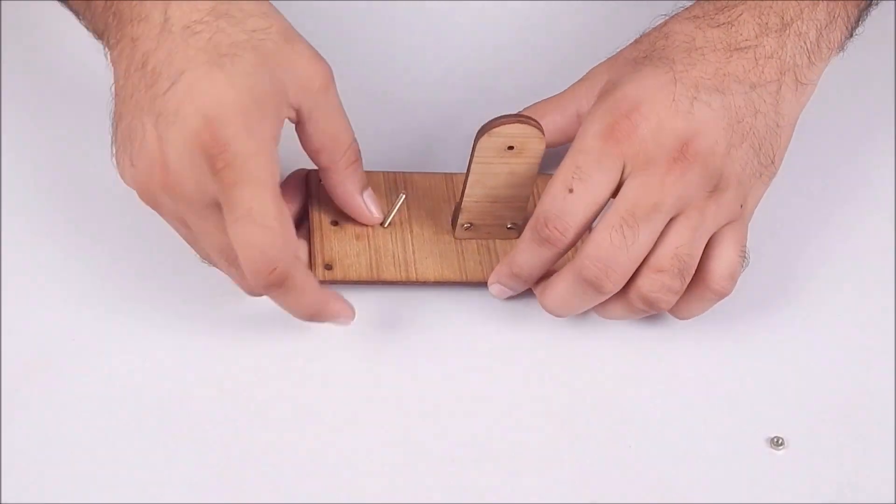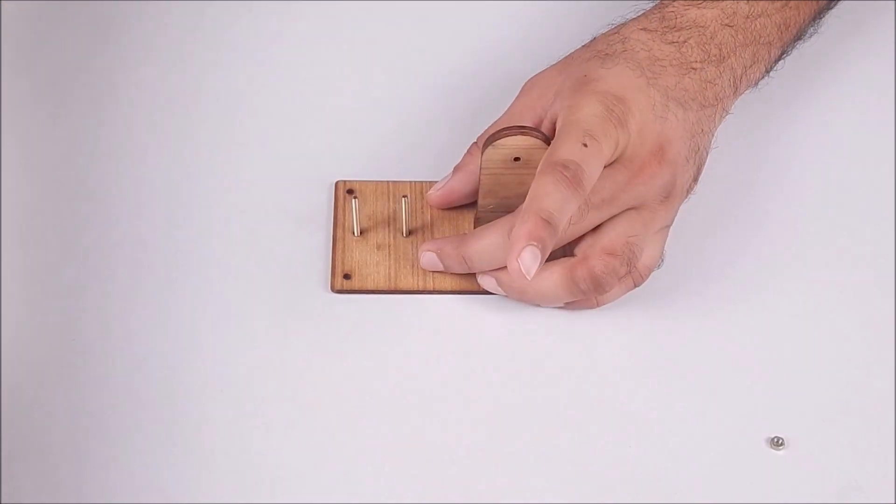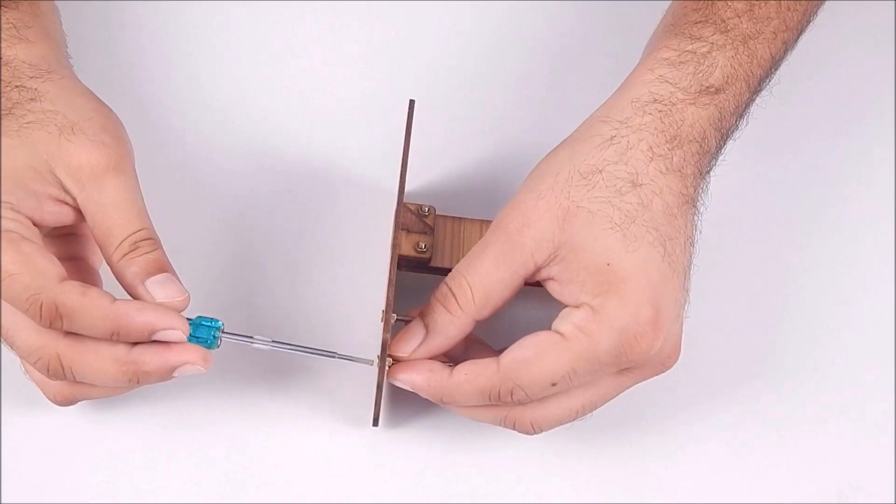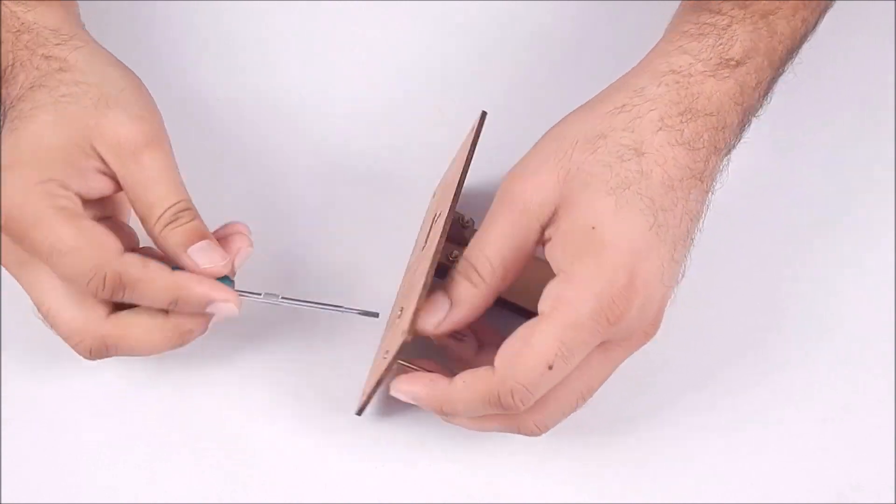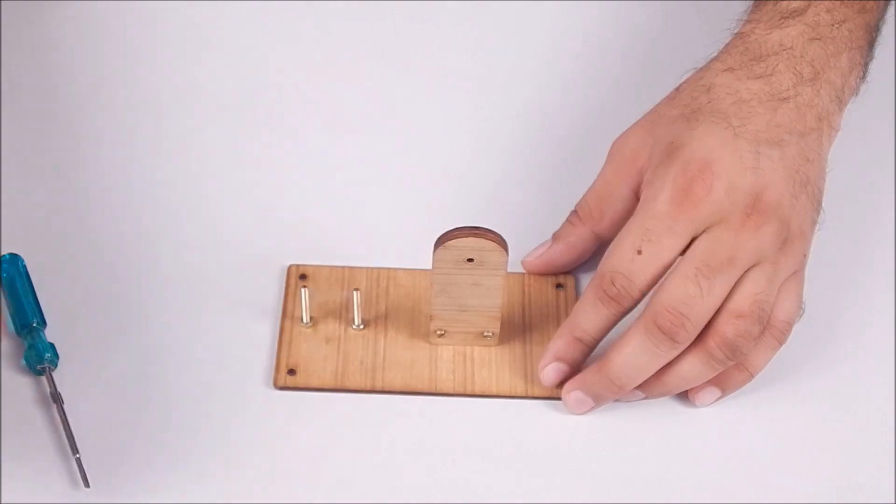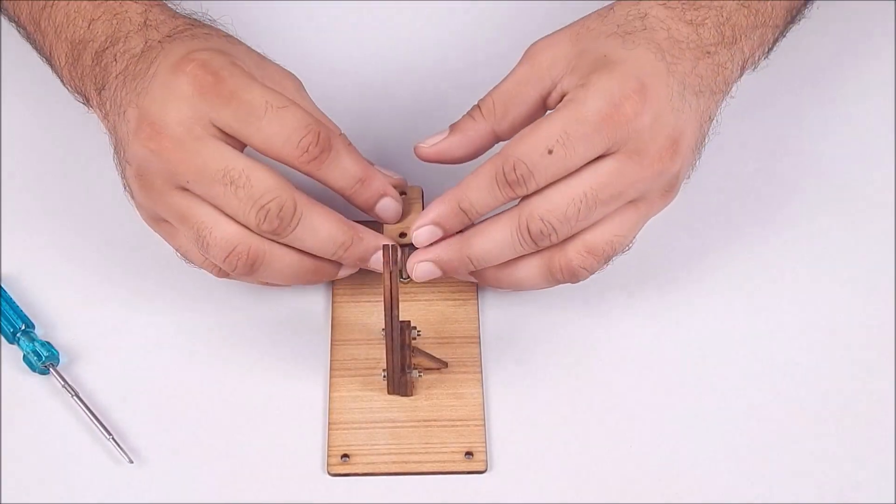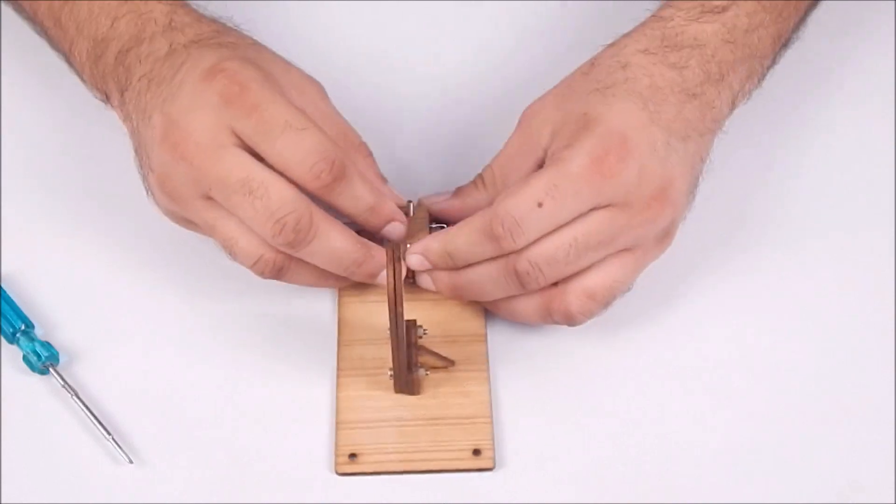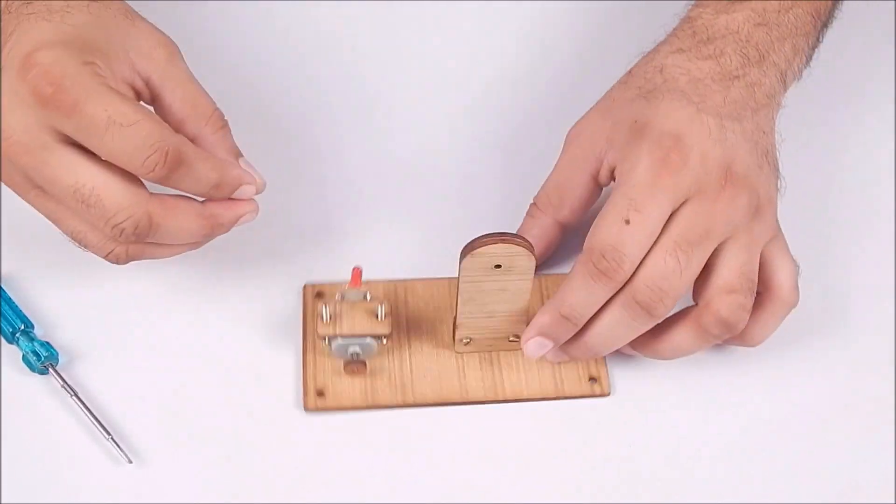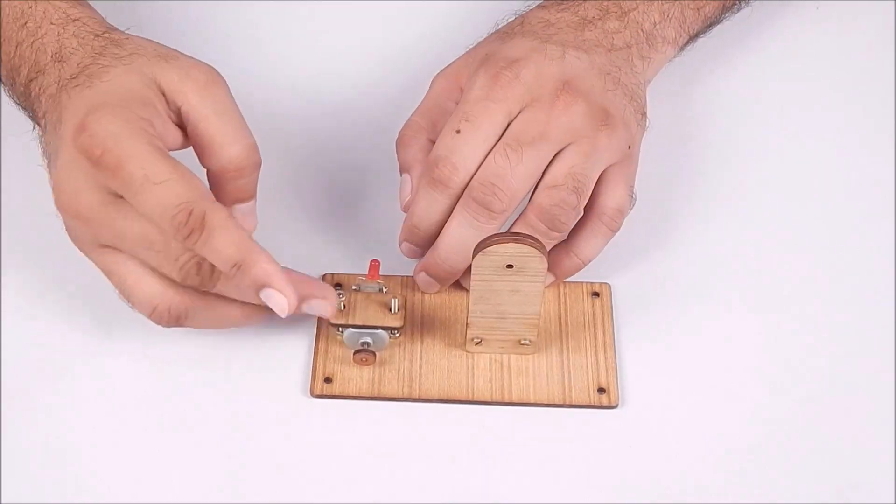Now to fix the motor which will act as a dynamo, use two M3x30 length bolts and nuts and hold them on the base plate. Attach the motor between the bolts and put the motor holding plate on top of it. Now fix the motor plate using M3 nut. Keep the nut loose as you might need to adjust the motor with the power wheel.